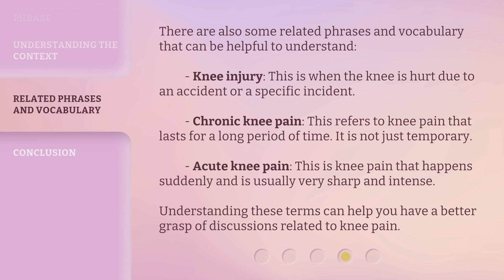There are also some related phrases and vocabulary that can be helpful to understand. Knee injury — this is when the knee is hurt due to an accident or a specific incident. Chronic knee pain — this refers to knee pain that lasts for a long period of time; it is not just temporary. Acute knee pain — this is knee pain that happens suddenly and is usually very sharp and intense. Understanding these terms can help you have a better grasp of discussions related to knee pain.